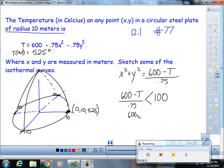So 600 minus T has to be less than 75, and so then you end up getting T has to be greater than 525 degrees.